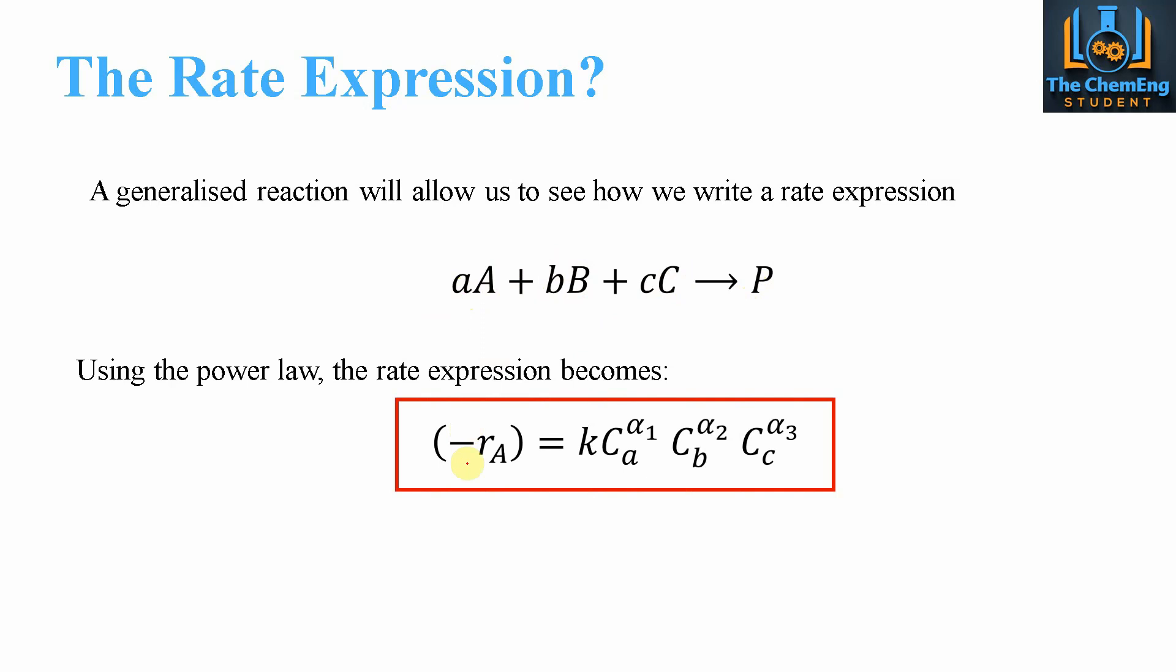We have -ra equals k, the reaction rate constant, multiplied by Ca to the power α1, Cb to the power α2, and Cc to the power α3.